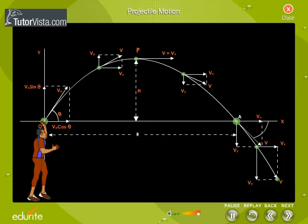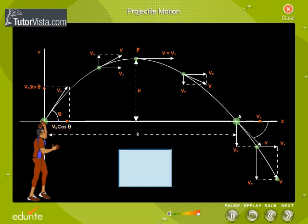The velocity of the projectile at any point of the trajectory goes on changing both in magnitude and in direction. The velocity can be resolved into two rectangular components: V0 cosθ along x-axis and V0 sinθ along y-axis.